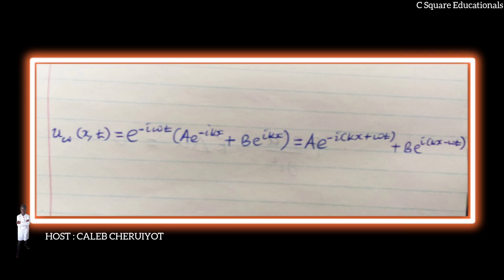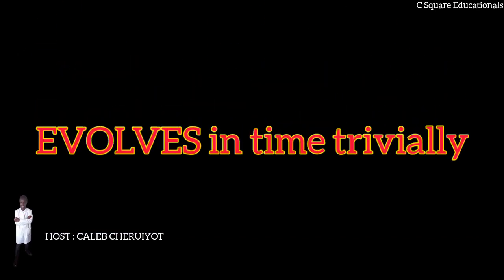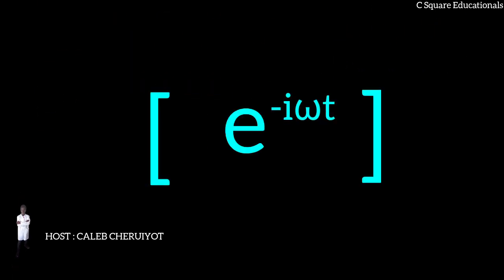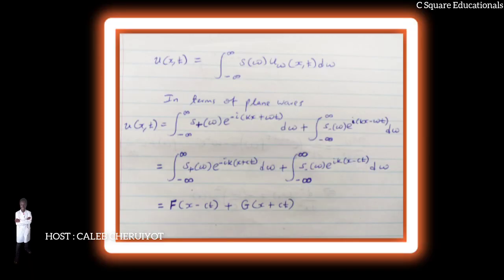Eigenmodes are useful in constructing a full solution to the wave equation because each of them evolves in terms of the phase factor e^(-iωt), so that a full solution can be decomposed into an eigenmode expansion shown,